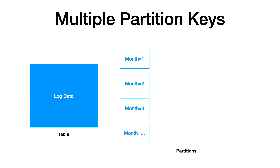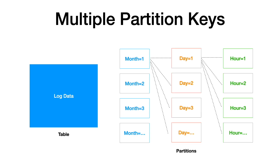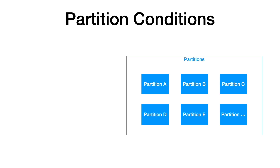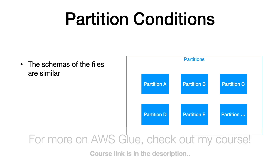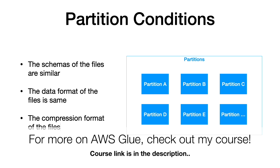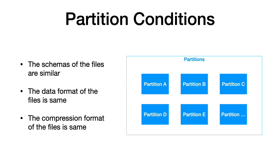You can partition the data in a nested manner. For instance, you can partition log data by month, inside month you can have days, inside days you can have hour, and so on. You can keep the data files under nested folders, and you can have multiple partition keys associated with a Glue table — in this case, month, day, and hour. Please note that to create partitions, the schemas of all the files should be similar, the data format should be the same, and the compression format should also be the same across all files. If these conditions are met, you will be able to create the table partitions successfully.